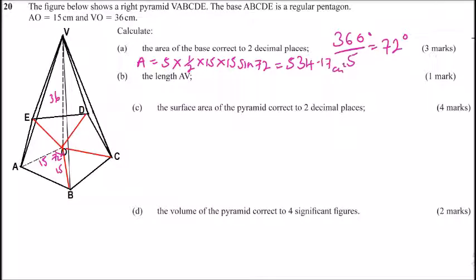That is the area of the base, which is a pentagon. This is 360 divided by 5 to get 72 degrees. That is how you work the first part of the question.